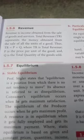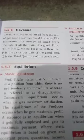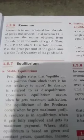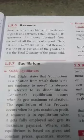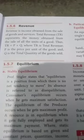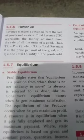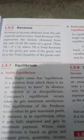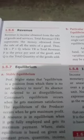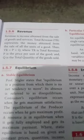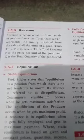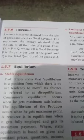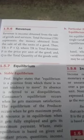Total revenue represents the money obtained from the sale of all the units of a good. That is TR equals P into Q — total revenue equals P into Q.